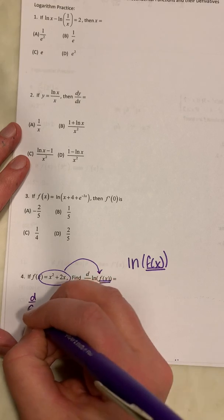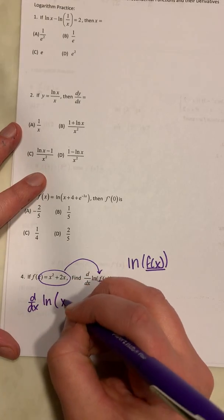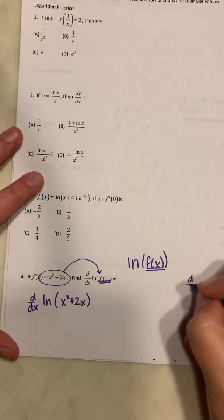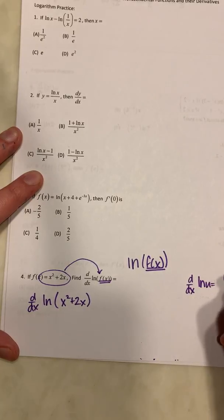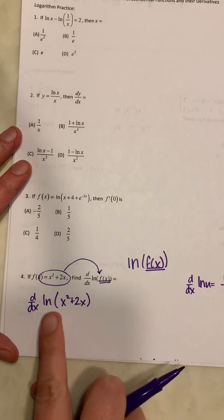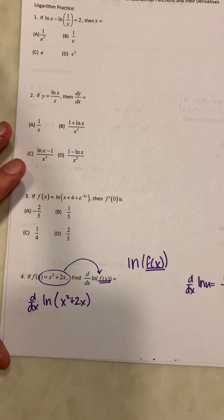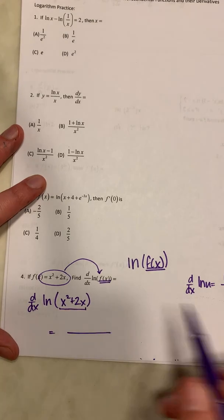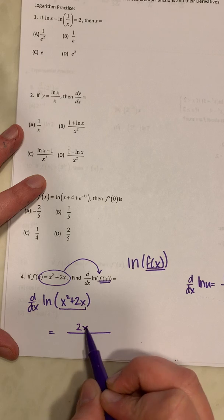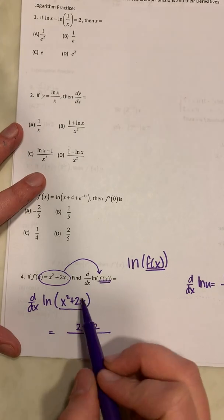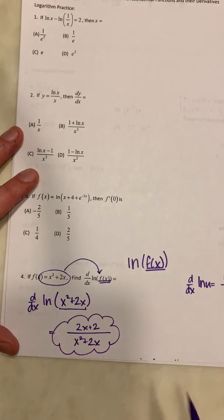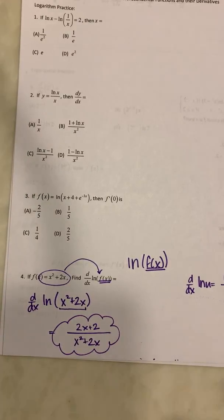What I really want is the derivative of the natural log of x squared plus 2x. Remember that the derivative d/dx of ln(u) is u prime over u. Since this is a natural log, I don't have to put ln base. So I'll put my u prime on top — the derivative of x squared plus 2x is 2x plus 2 — and the original expression x squared plus 2x stays on the bottom.